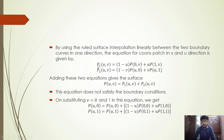To obtain a bilinearly blended Coons surface, we add P₁(U,V) and P₂(U,V). However, when we add these two, the boundary condition is not satisfied. When we substitute V=0 and V=1, we obtain some additional extra terms: substituting V=0 gives P(U,0) = P(U,0) + (1−U)·P(0,0) + U·P(1,0), and substituting V=1 gives similar extra terms.